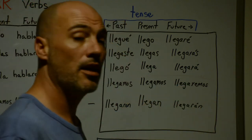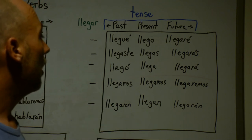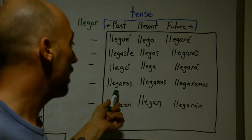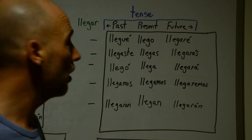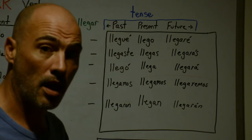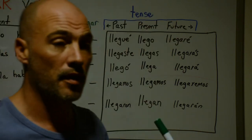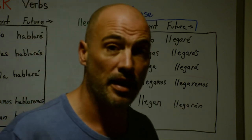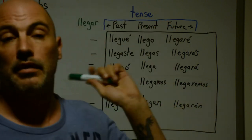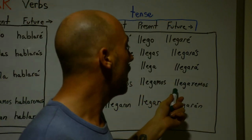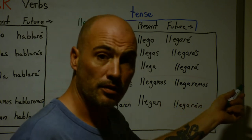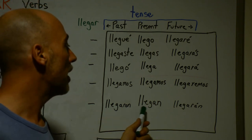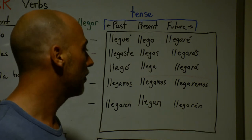Llegará — he or she will arrive. I'm sure you're seeing the same pattern. Llegamos — we're arriving now, or we arrived in the past. Same as the hablar example — how do you know? It's from the context: 'llegamos' means we arrive now, while 'anoche llegamos' means last night we arrived. Llegaremos — we will arrive. They: llegaron — they arrived. Llegarán — they will arrive.